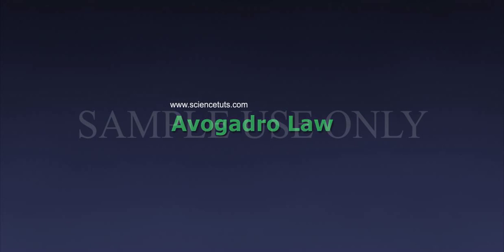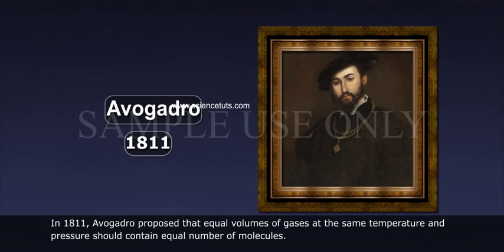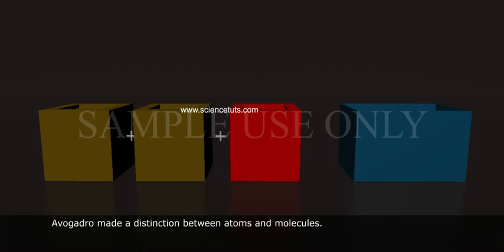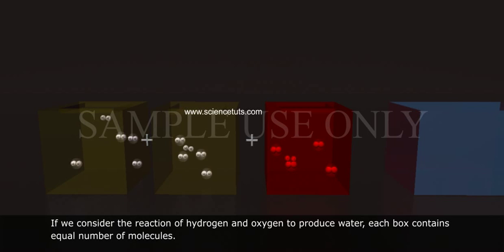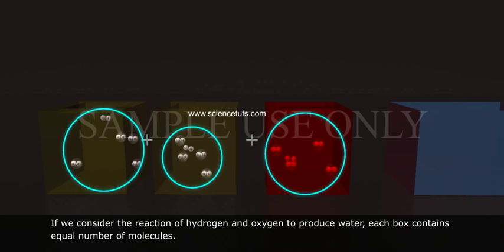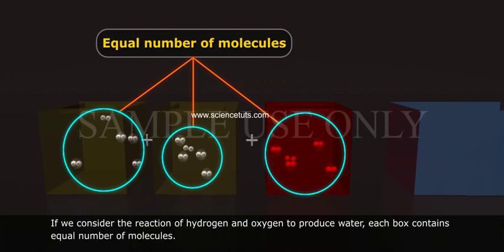Avogadro Law. In 1811, Avogadro proposed that equal volumes of gases at the same temperature and pressure should contain equal number of molecules. Avogadro made a distinction between atoms and molecules. If we consider the reaction of hydrogen and oxygen to produce water, each box contains equal number of molecules.